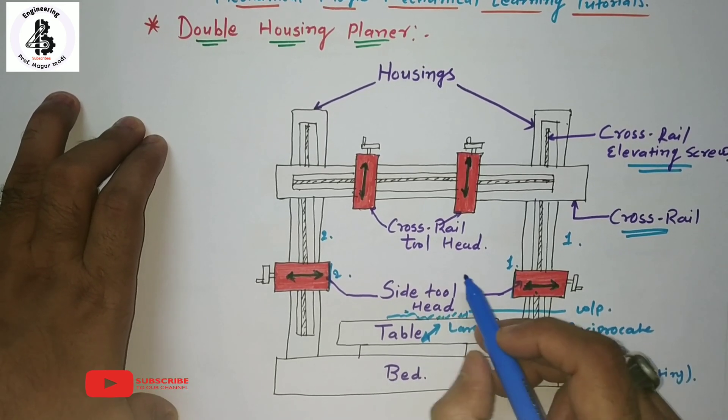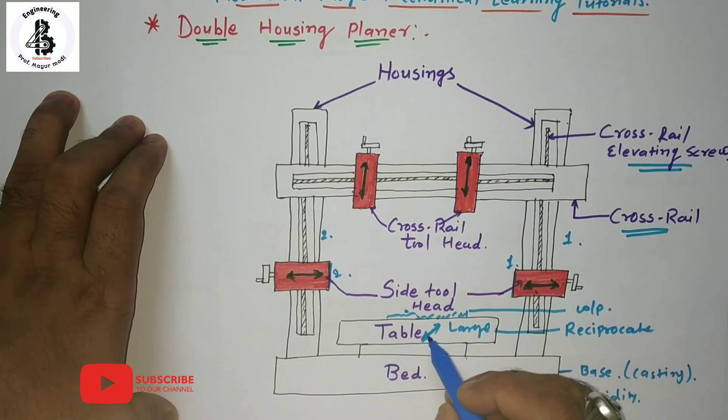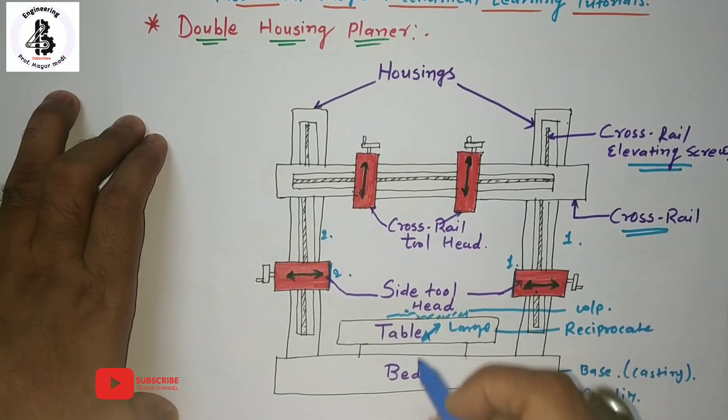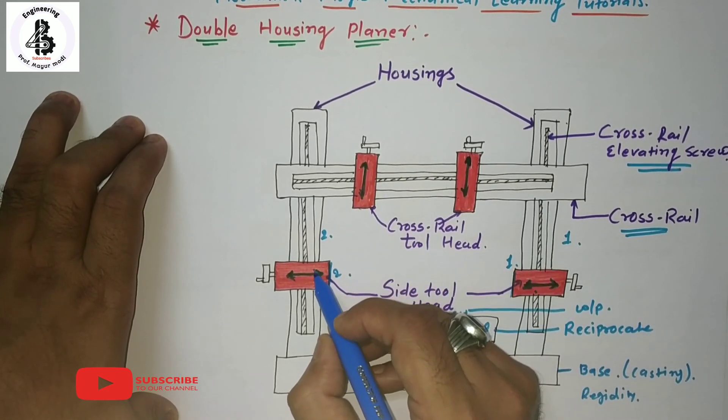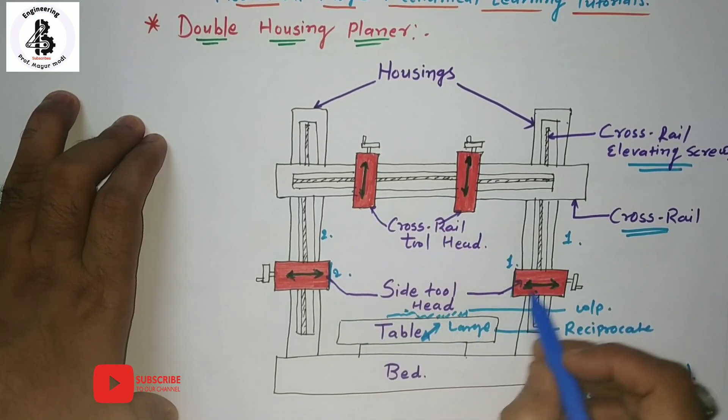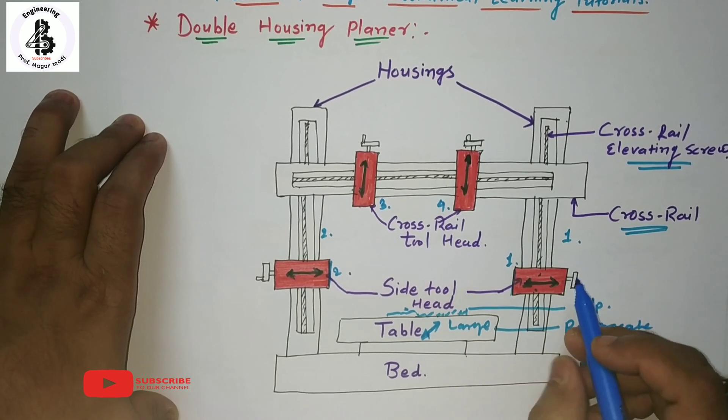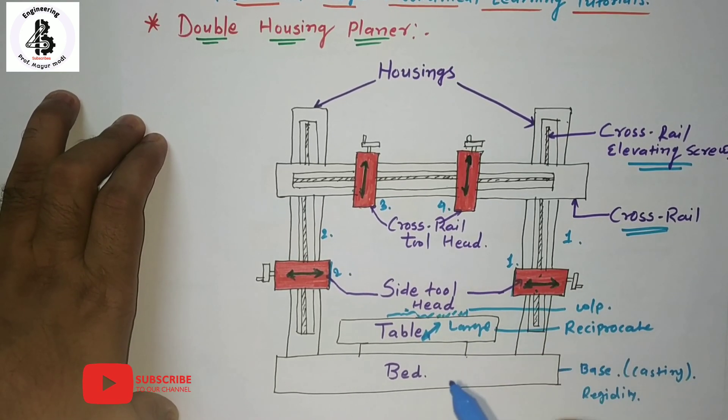It will be easily used. Basically, the workpiece will be mounted onto the table and that will reciprocate. These all are stationary members and the position of these tools will be one, two, three, and four. You can use four kinds of tool mechanisms for single pass operations.